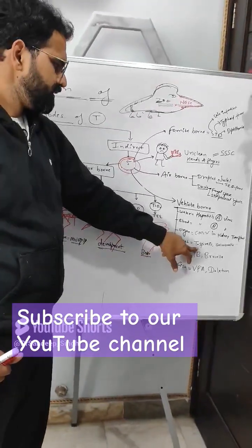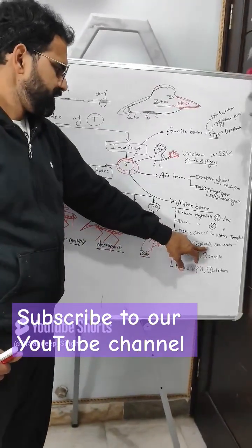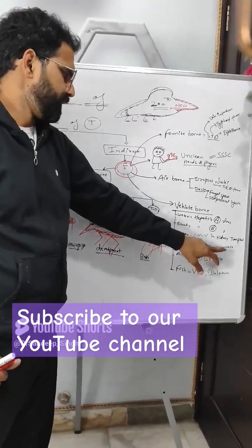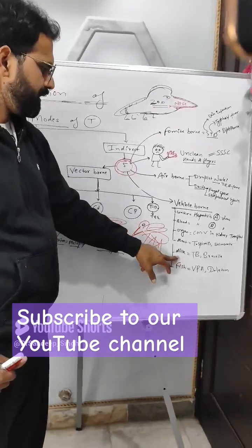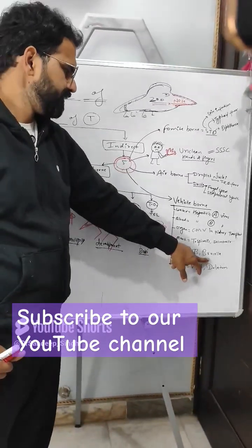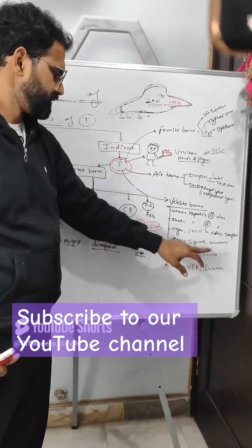For meat: Trichinella spiralis and Salmonella. For milk: Tuberculosis and Brucellosis.